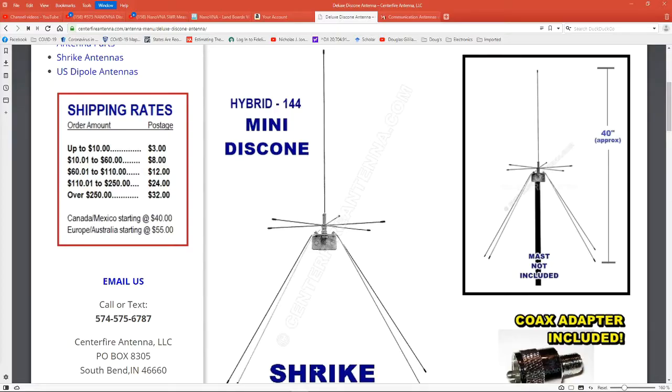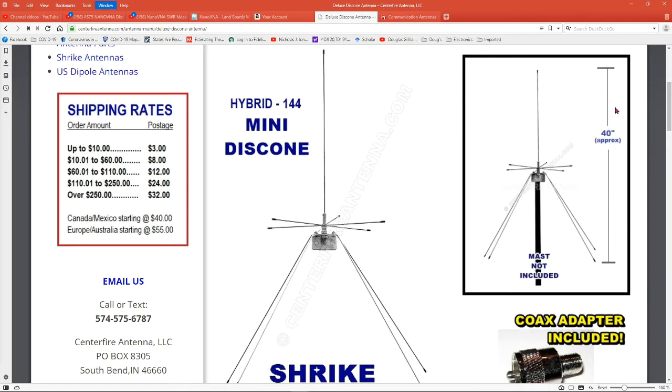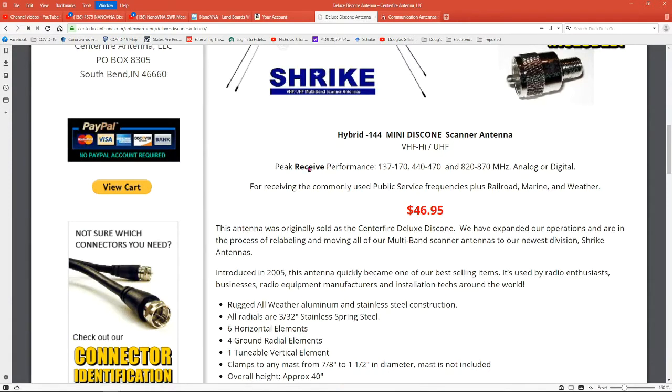The original antenna I bought on Amazon isn't listed anymore, but I found it in my purchase history as a CenterFire antenna. I went to the CenterFire site and it's called the deluxe disc cone antenna. They have a hybrid 144 mini disc cone, which I'm assuming is 144 for ham radio. It looks an awful lot like what I have out there, so I think it's the same antenna.